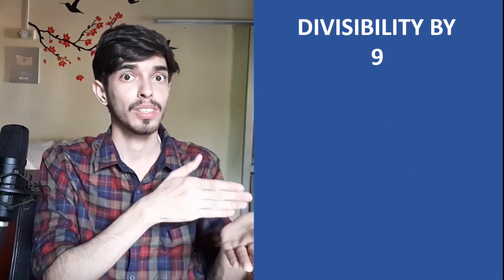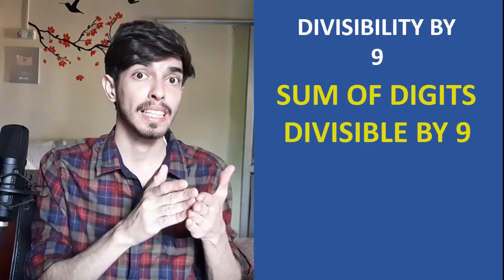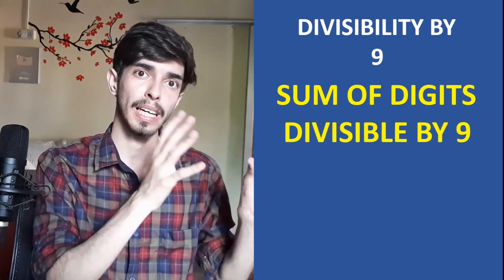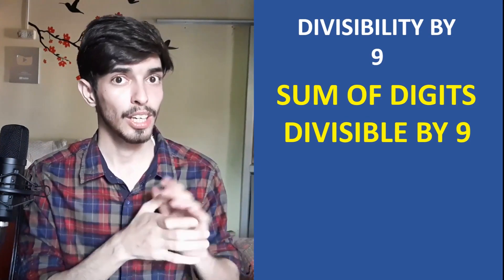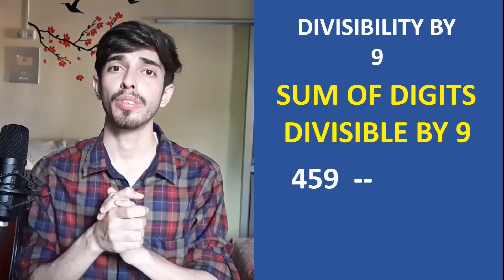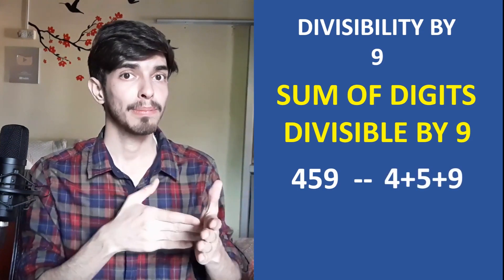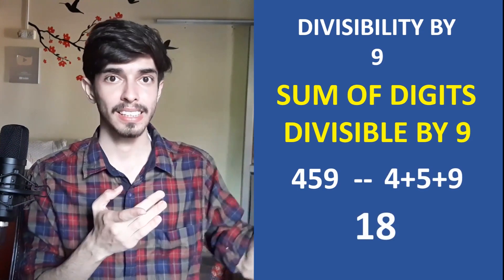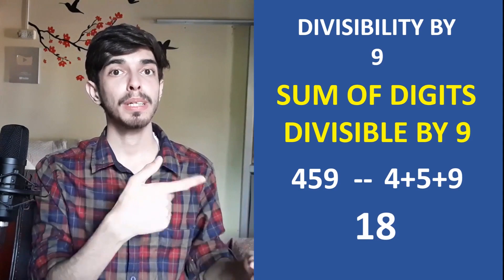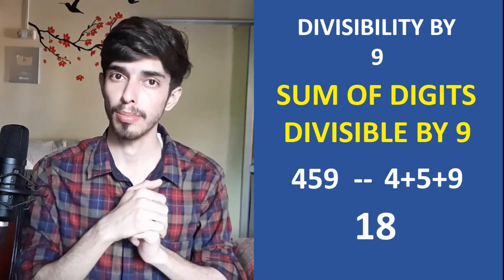A similar test applies for 9: if the sum of the digits is divisible by 9, then that number is also divisible by 9. For example, 459: 4 + 5 + 9 = 18, and 18 is divisible by 9, so 459 is also divisible by 9. Numbers passing these tests are not prime numbers.